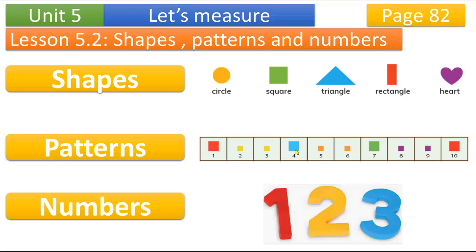Look at number four — again we have a big square. And five and six we have two little squares. After two small squares we have a big square again. Look at the two small squares after the big square. At number ten, after two small squares we have a big square. This is a pattern — repeating: one big square, two small squares, one big square, two small squares. What will be next? You are right — two small squares! So here is a pattern: repeating objects.